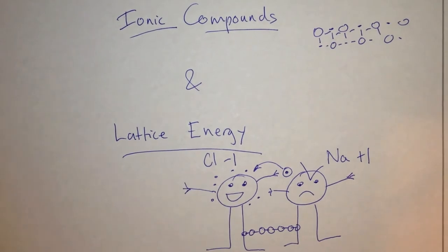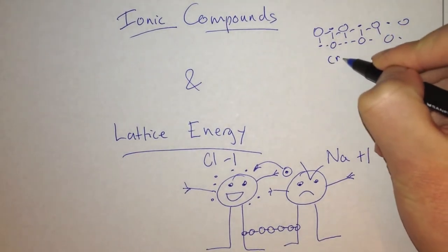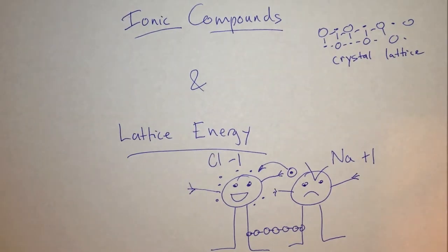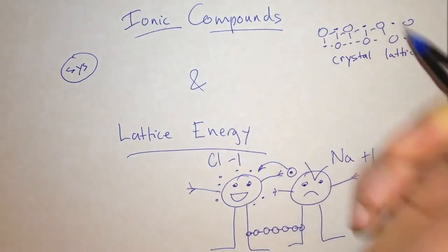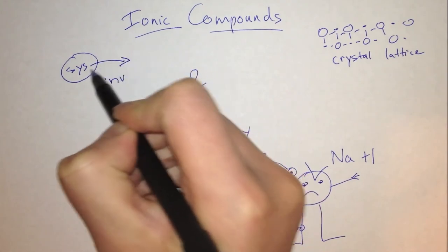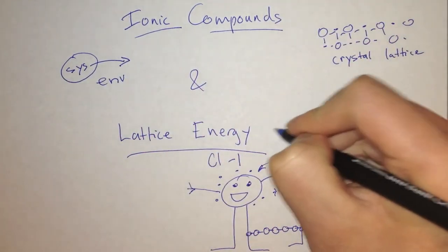This structure is called the crystal lattice. The lattice energy is the energy that is released when the crystal lattice is formed. All compounds are created so that they lower their energy, and that energy is released into the environment. Based on our convention of defining energy from the point of view of the system, the energy released from the system is leaving it, so our lattice energy is always negative.